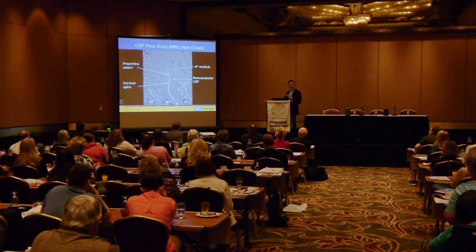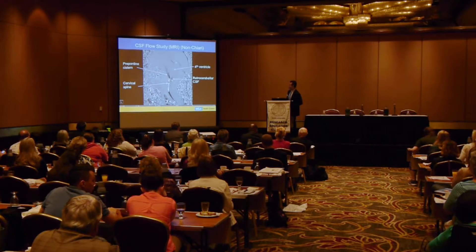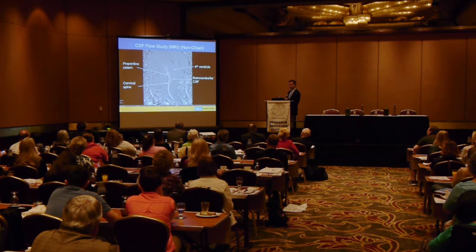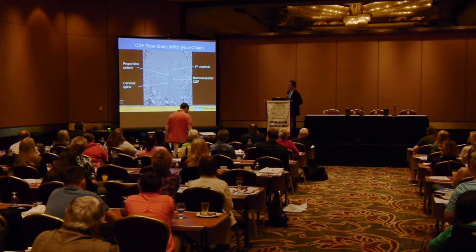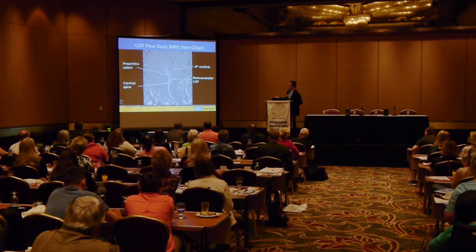Looking at the spine: here we have CSF in front of the spinal cord — it's either all black or all white at the same time, pulsing in sync because it's all connected. Behind the spinal cord there's less fluid, which is normal, but it pulses in sync with the fluid in front because there's no obstruction. Going up into the fourth ventricle, there's less fluid but it still pulses in the same phase. This patient doesn't have a Chiari malformation — that's what normal looks like.